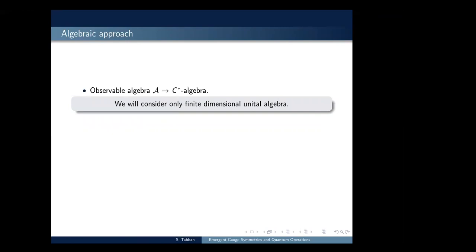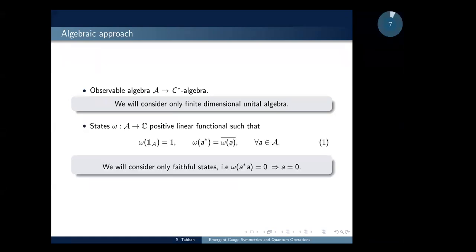In the algebraic approach to quantum physics, we start with a C*-algebra. During this work, we only consider finite-dimensional unital algebras. We have states over this algebra that are positive linear functionals that are normalized, and we can interpret them as the expectation values of the elements of the observable algebra. In this work, we only consider faithful states — that is, if the expectation value of a positive element is zero, then that element must be the null one.